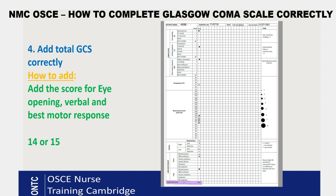Then you add the total GCS — this is another common mistake. People think they've done the GCS but forget to add the total score. The total goes at the bottom of the chart. The normal Glasgow Coma Scale score in neurology is 15. Your patient may score 14 if they are confused. You shouldn't get any score less than 14 in the exam, as it's highly unlikely, because eye opening is spontaneous and the actor can obey commands.